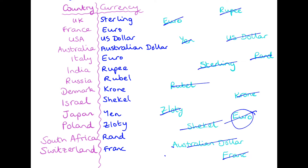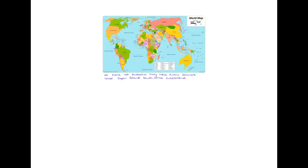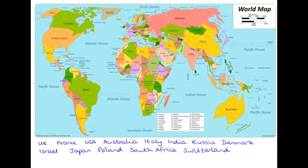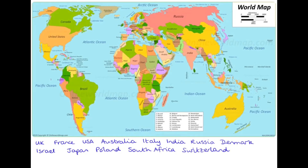Now we're going to look at a map of the world. I've written down all the countries underneath and we're going to check if we can remember what the currencies are called and find them all. First of all, UK — the UK uses sterling. Can we find the UK on the map? There we go. We're going to call UK number one and put a one right in the middle of the UK.